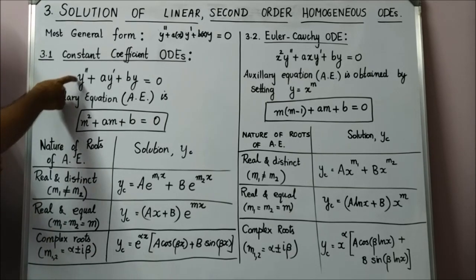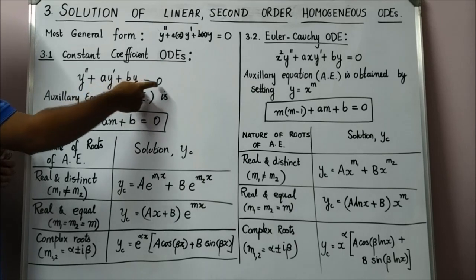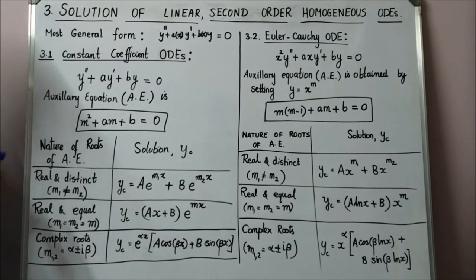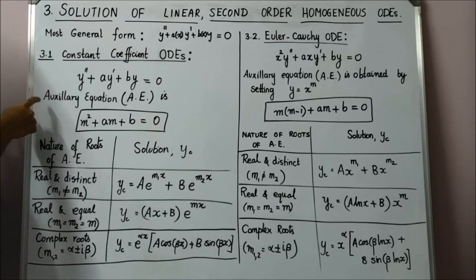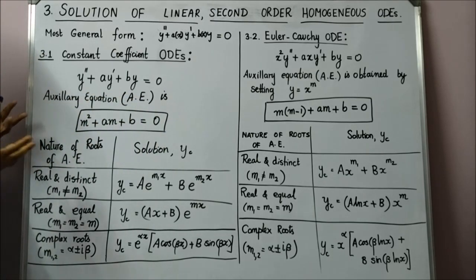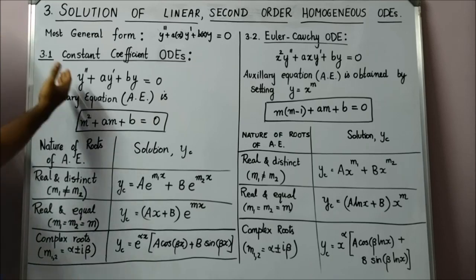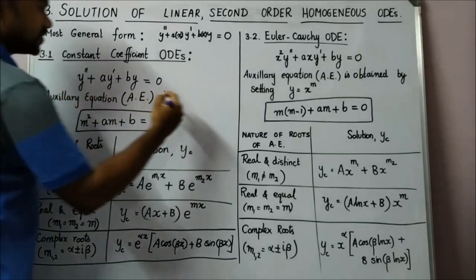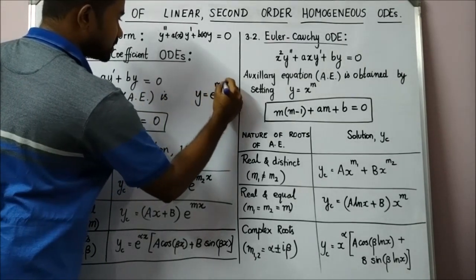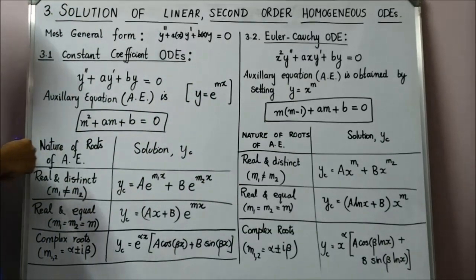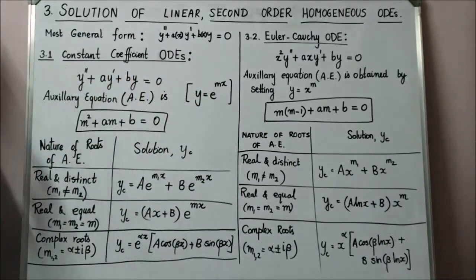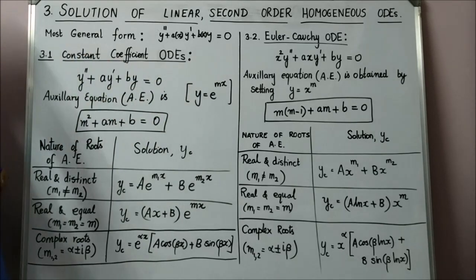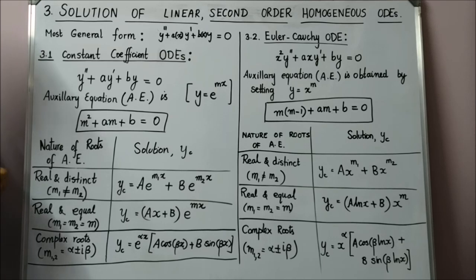The most general form of a constant coefficient ODE is: Y double prime plus AY prime plus BY equals 0. We are still looking at homogeneous equations, so the right-hand side is 0. The auxiliary equation is obtained by asking what kind of solution satisfies this equation. We come up with Y equals e^(MX), substitute it into the differential equation, and end up with the auxiliary equation: M squared plus AM plus B equals 0.